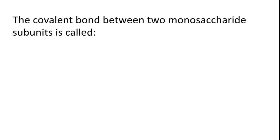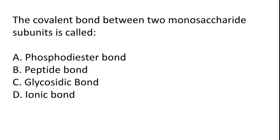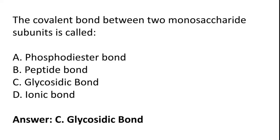The covalent bond between two monosaccharide subunits is called: Phospho-diester bond, peptide bond, glycosidic bond, ionic bond. So the correct answer is option C, glycosidic bond.